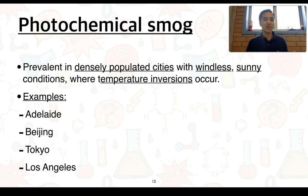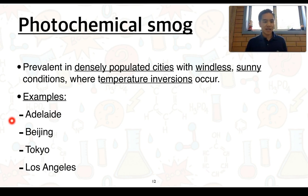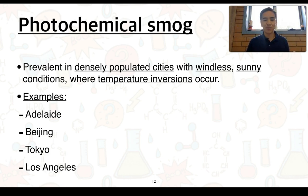Photochemical smog is often prevalent in densely populated cities that experience windless, sunny conditions, where a phenomenon called temperature inversions can occur. Examples include Adelaide, Beijing, Tokyo, Los Angeles, New York, and London, which have all experienced photochemical smog.